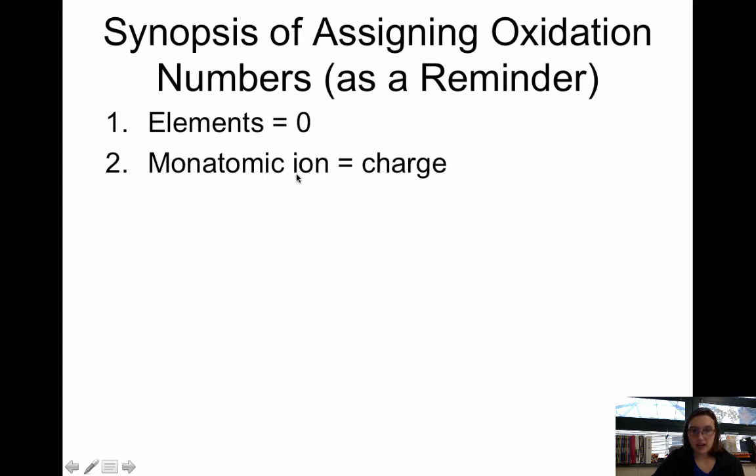If you have a monatomic ion, that means you have a single atom as an ion, that oxidation number is the same as the charge on the ion. For example, H+, oxidation number would be plus one. Cl-, the oxidation number would be minus one.